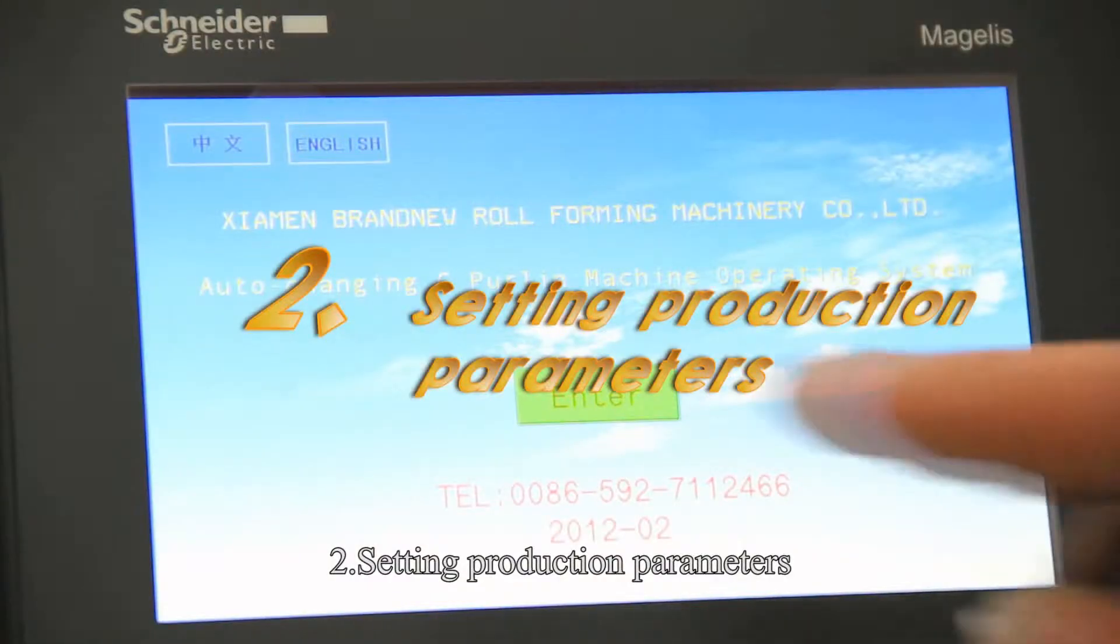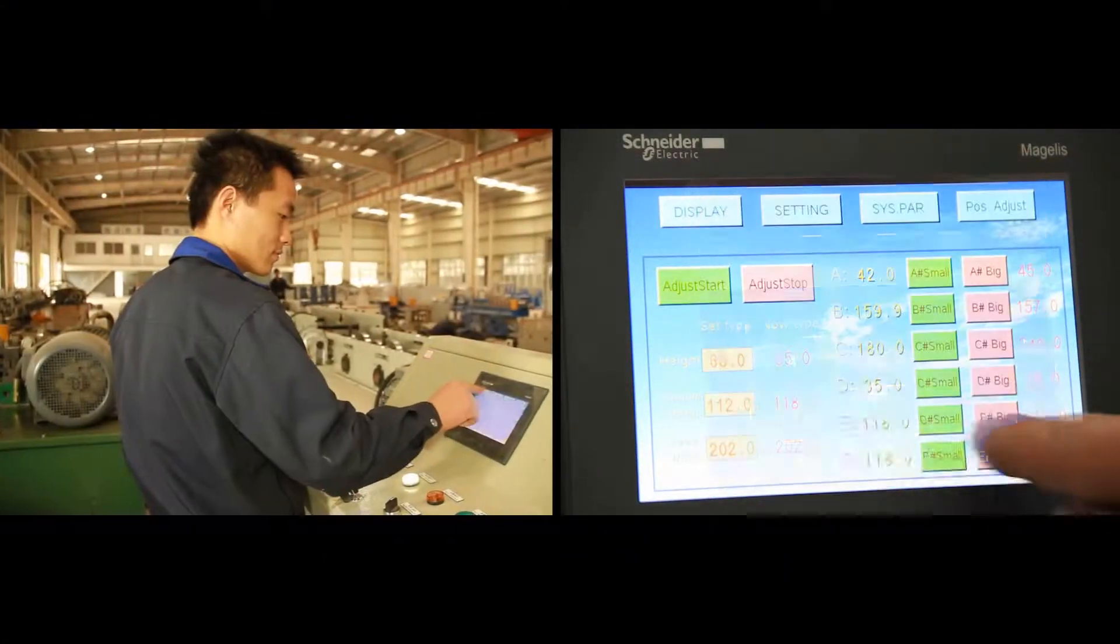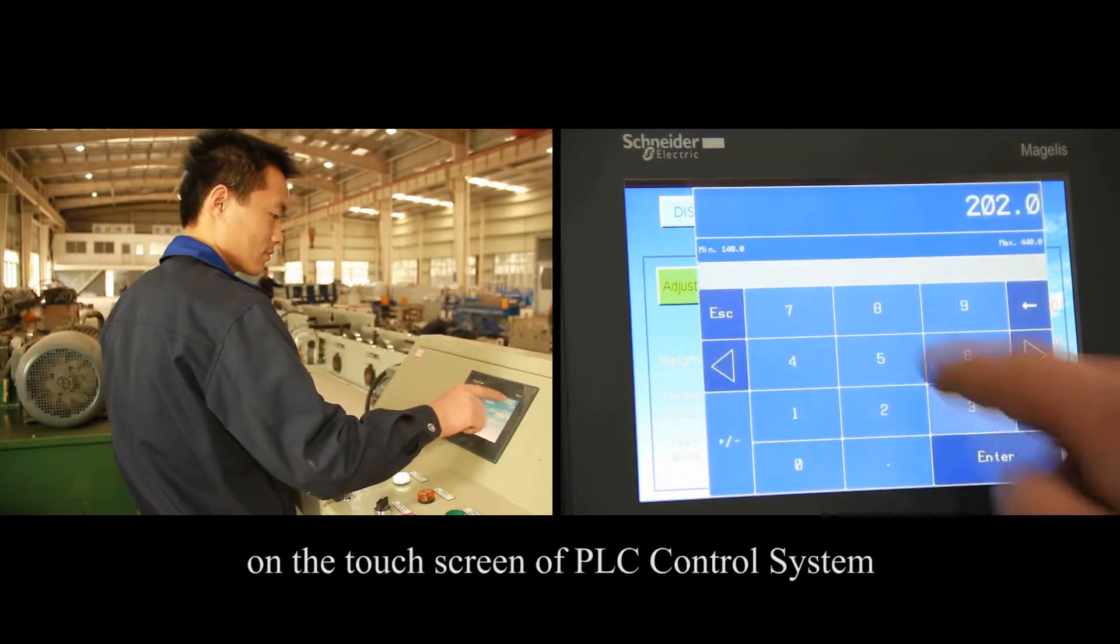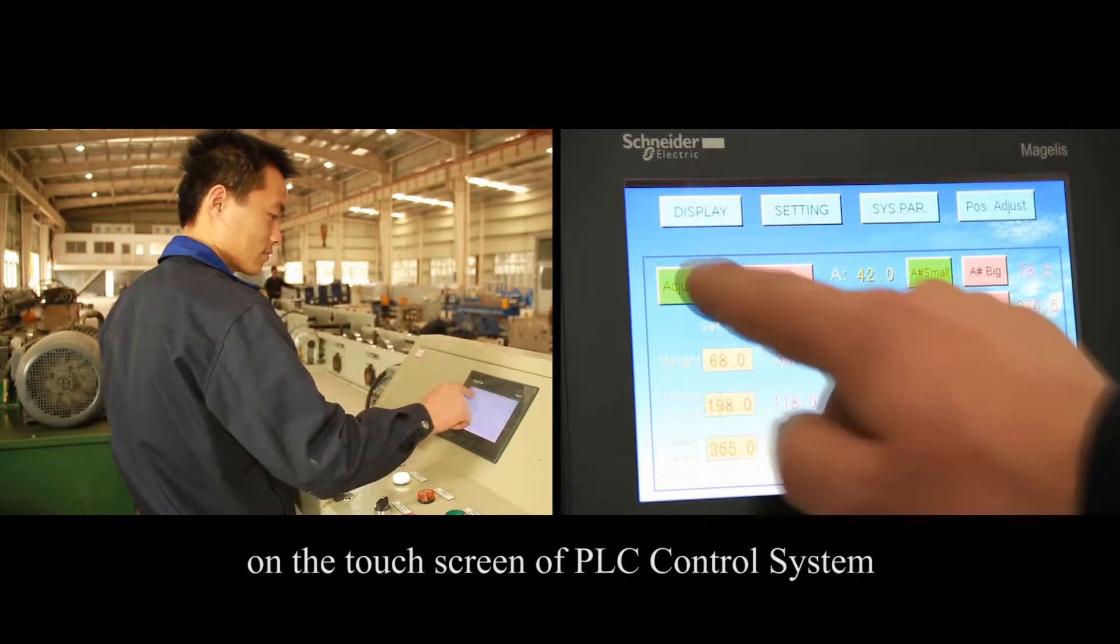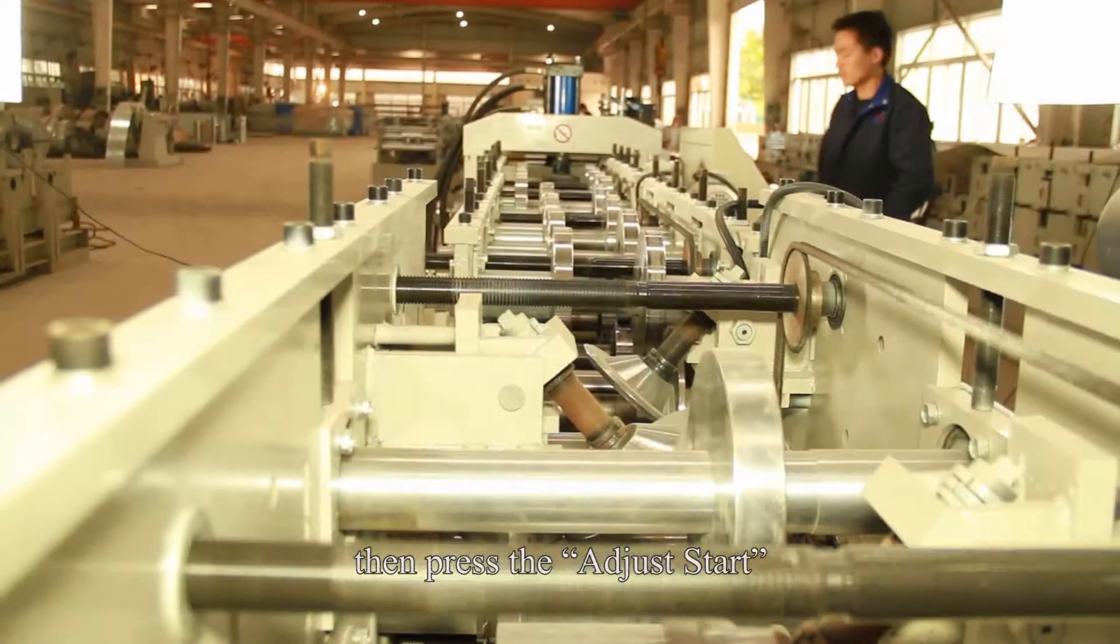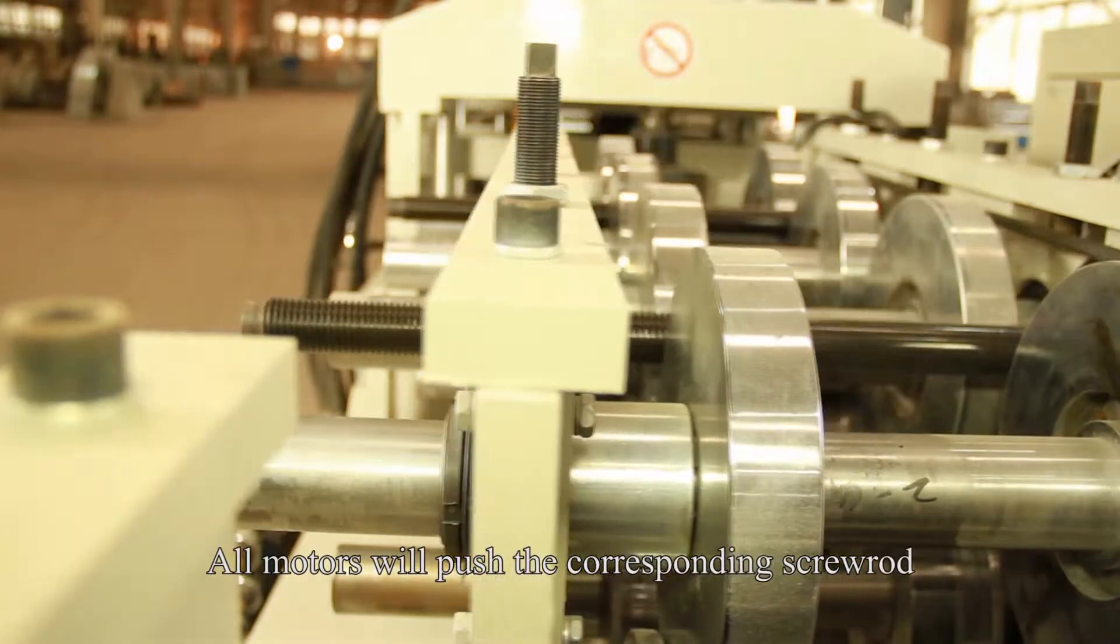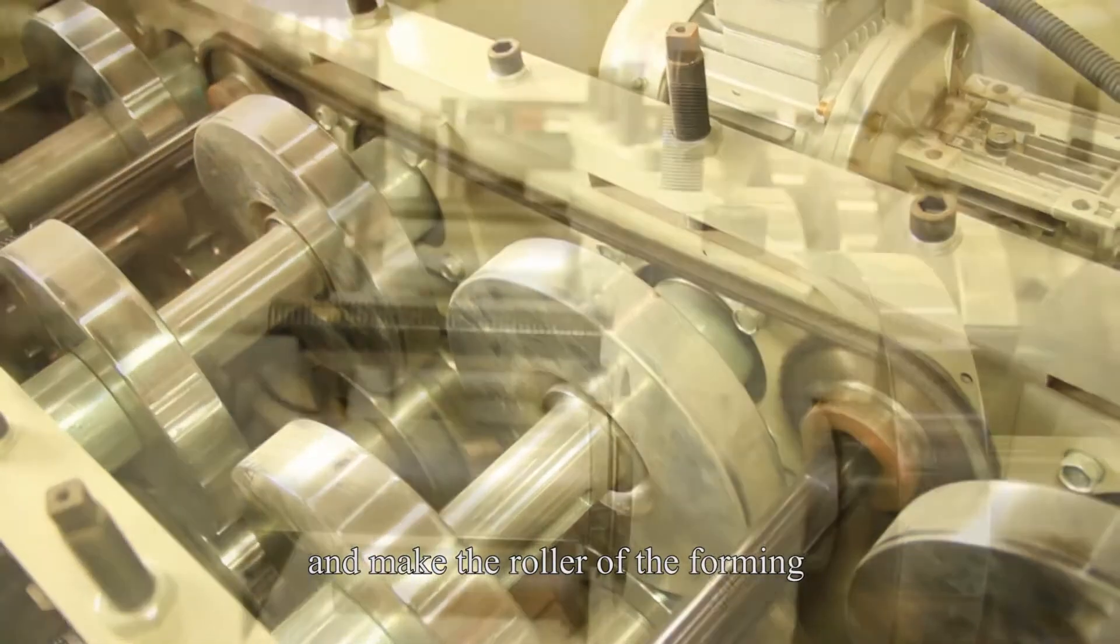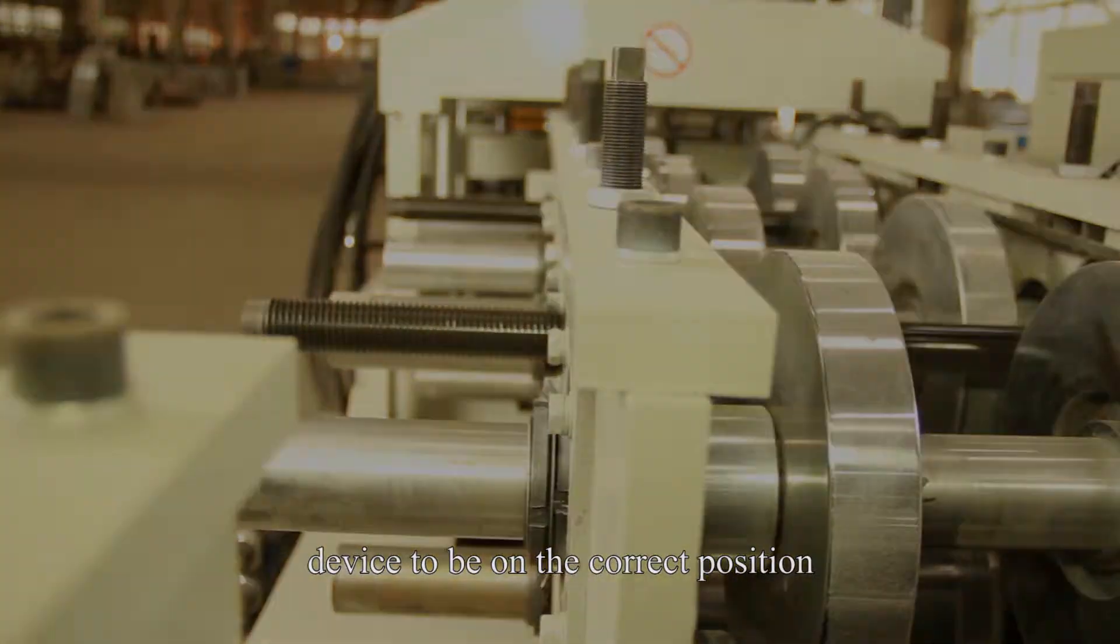Number 2: Setting production parameters. Input the height, web width and the feeding width on the touchscreen of the PLC control system. Then press the Adjust Start. All motors will push the corresponding screw rod, move the feeding device to the correct position, and make the roller of the funnel device be in the correct position.